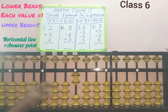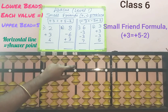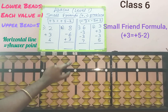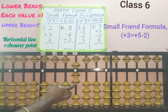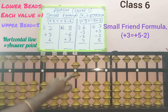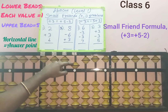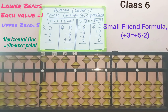Now we will use the formula for adding 3. Three is less than 5 and the question has a plus symbol, so we should check whether we can do plus 5. Here 5 beads are available, so we add 5. While adding 5, the friend of 3 is 2 since 3 plus 2 equals 5. So remove the friend of 3, which is 2. Therefore, plus 5 minus 2 is the small friend formula for plus 3, and 3 is added.